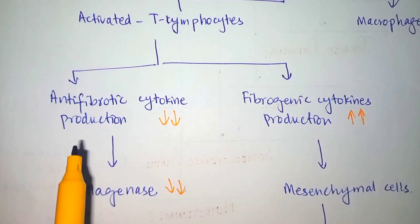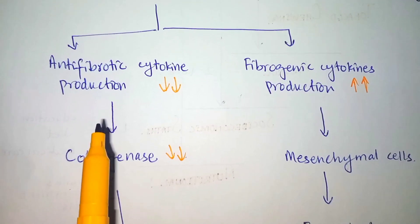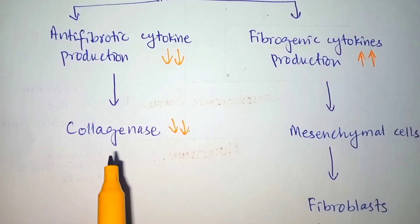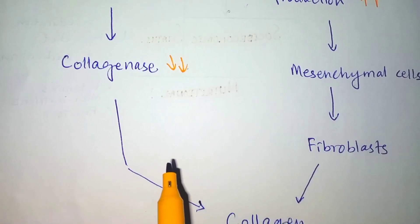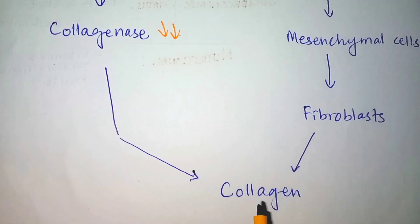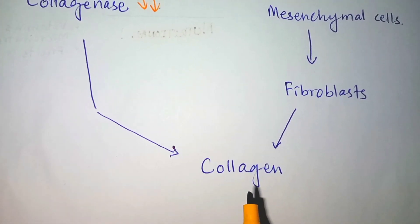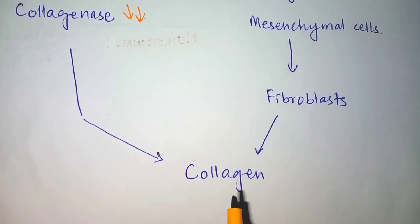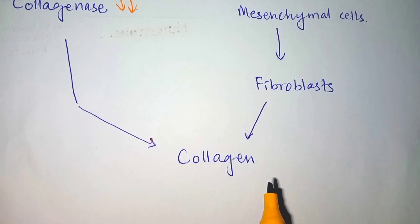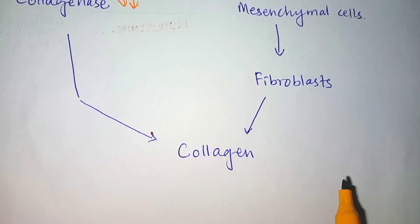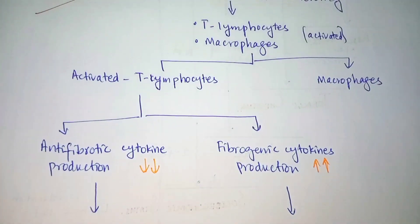On the other hand, cytokines liberated by the increased T lymphocytes down-regulate collagenase production. When collagenase production is reduced, this causes a decrease in the degradation of collagen, which alternatively increases the accumulation of extracellular matrix, especially collagen. This also results in fibrosis of the oral mucosa. This is the pathogenic mechanism of submucous fibrosis.